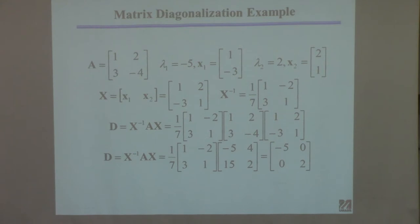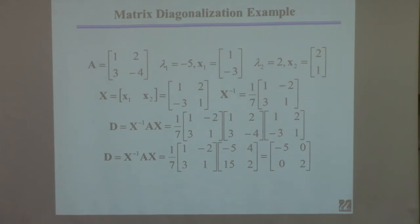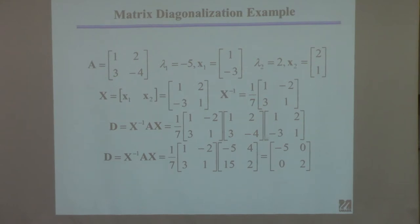A student asks: what's the benefit of this method if you already have to have the eigenvalues to get there? The answer is: if you know this result is true — as shown on the previous slide — then you already know D will have the eigenvalues on the diagonal. This is just demonstrating for this particular case that it works. You can always write down D immediately after finding the eigenvalues.